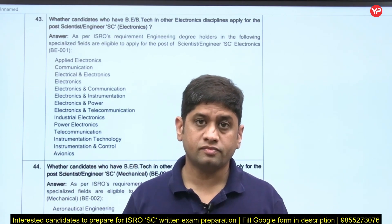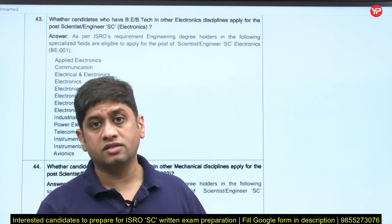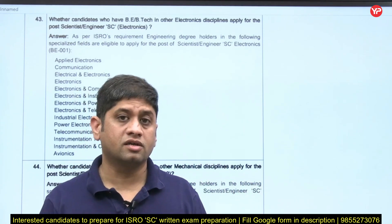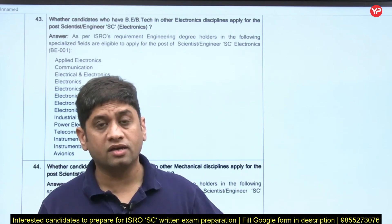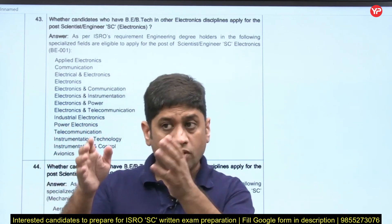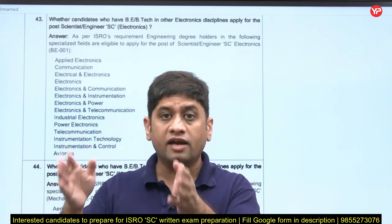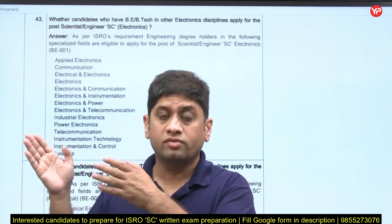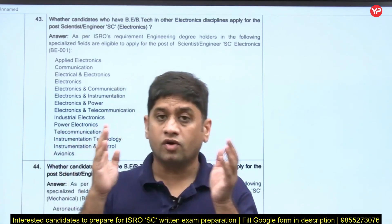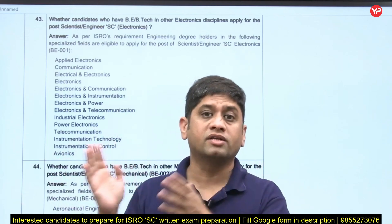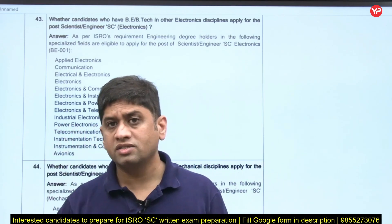Out of 80 questions being asked, 60 will be from your core branch — let's say mechanical — and 20 will be from the elite branches. For electronics, 20 will be from the elite branches of electronics; for computers, 20 from the elite branches of computers. Students have confusion about what these elite branches are and what elite courses mean.